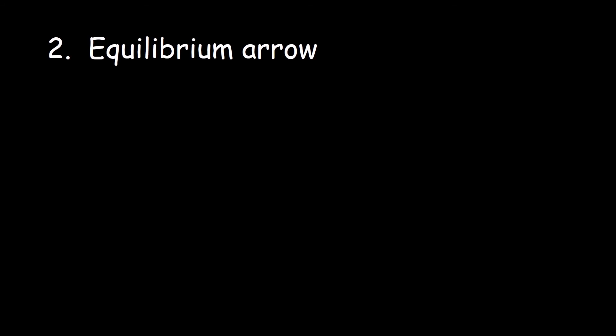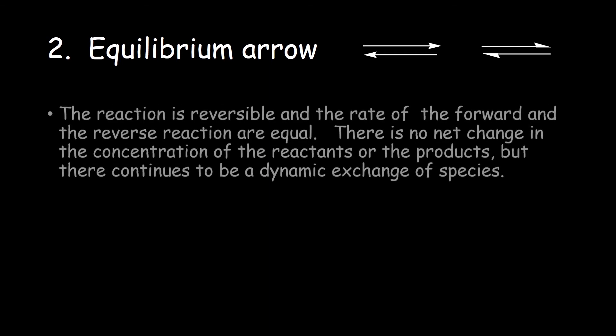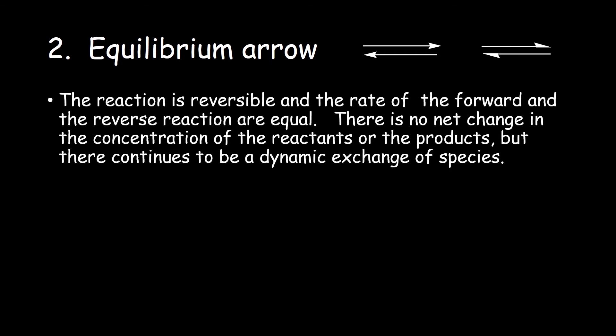Number two. The equilibrium arrow. This shows that the reaction is reversible and the rate of the forward reaction and the rate of the reverse reaction are equal. There is no net change in the concentration of the reactants or the products, but there continues to be a dynamic exchange of species.